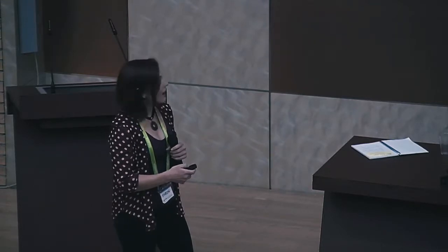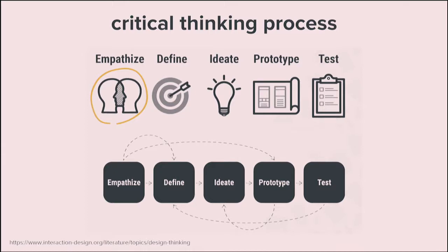Once you really understand who you're building for, you can start to Define your problem with more clarity. You have your stakeholders' ideas of what you want the product to be, but when you filter that through everything you've learned from researching your users, you can define the problem better. Then you can start to Ideate, and then Prototype. Prototyping can mean a lot of things — it could be a paper prototype, Post-it notes, or something like a fully finished piece of software. Because ultimately you're going to Test it and then iterate on it, and you're really never finished — especially with software design.